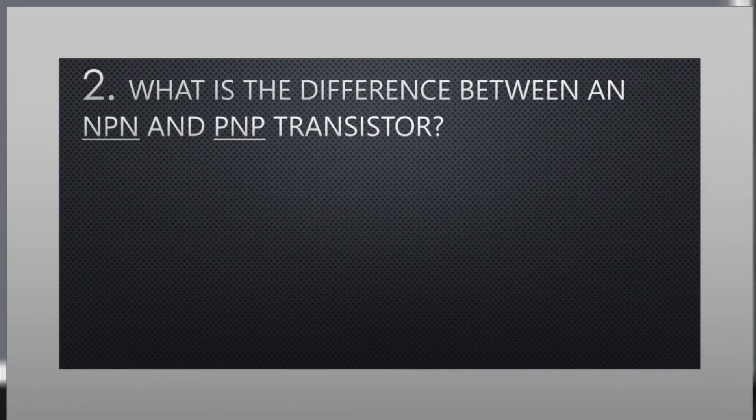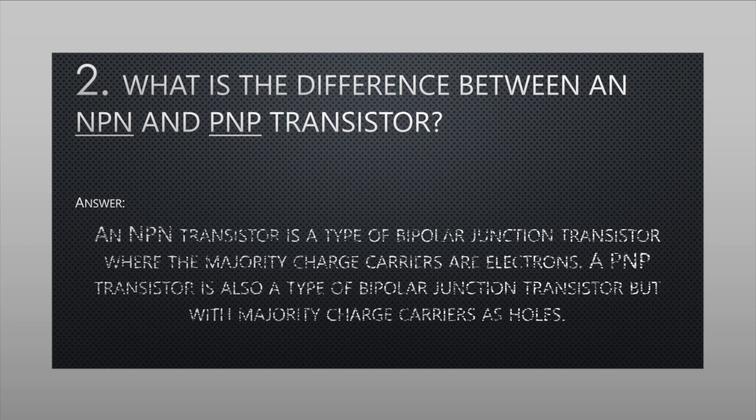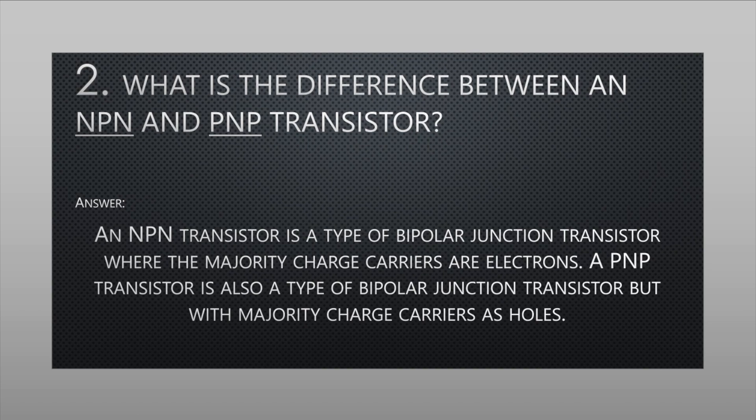What is the difference between an NPN and PNP transistor? An NPN transistor is a type of bipolar junction transistor where the majority charge carriers are electrons. A PNP transistor is also a type of bipolar junction transistor, but with majority charge carriers as holes.